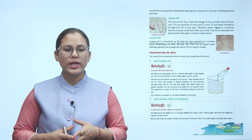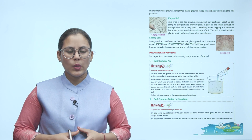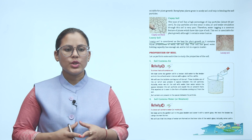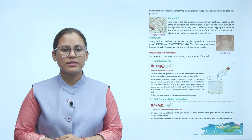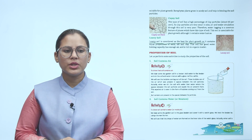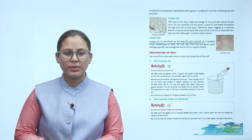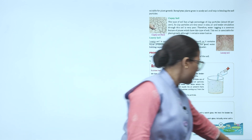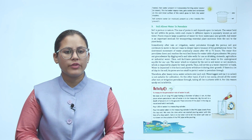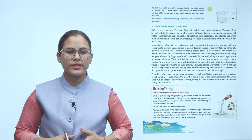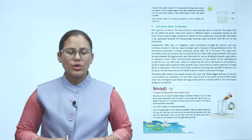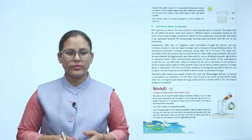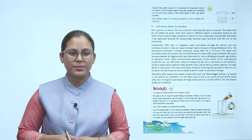Activity 4 — To show soil contains water or moisture: We take some dry garden soil in a glass beaker and cover it with a watch glass. We heat the beaker using a Bunsen burner. We will see that tiny drops of water are formed on the inner side of the watch glass. When soil is heated, water present evaporates forming water vapor. This hot vapor rises, gets cooled and condenses on the cold inner surface of the watch glass to form tiny water droplets. Soil contains water or moisture present as a thin, invisible film around its particles.